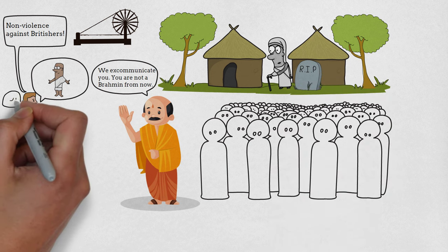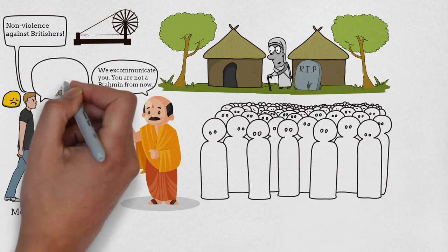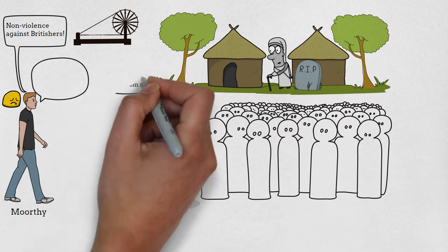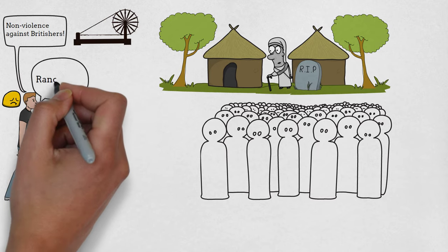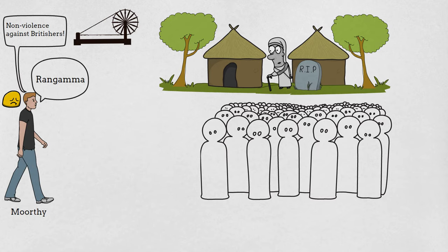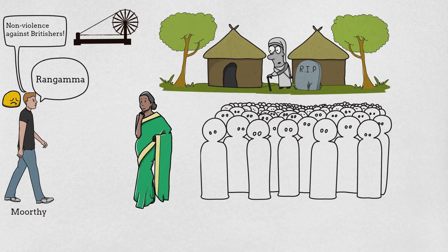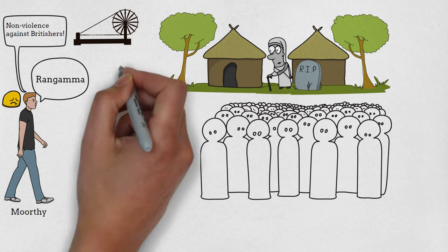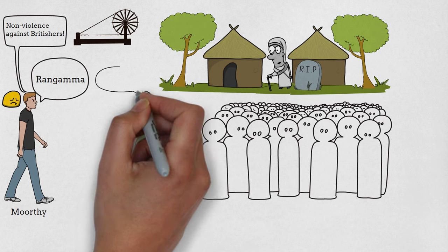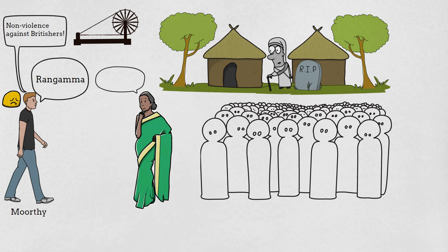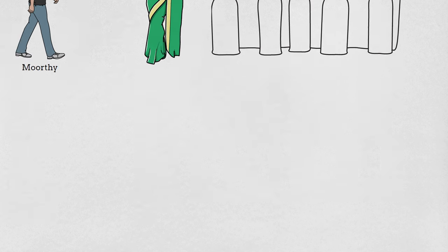His mother's sudden demise hugely impacts Moorthy and he starts living with Rangamma, another character in the novel. Rangamma is a widow but she is educated and politically active. She consoles and sympathizes with Moorthy, encourages him to get back into the Indian independence movement, and helps him overcome the loss and move on in life.